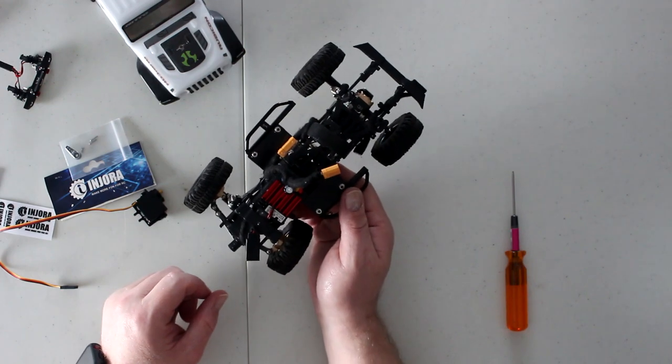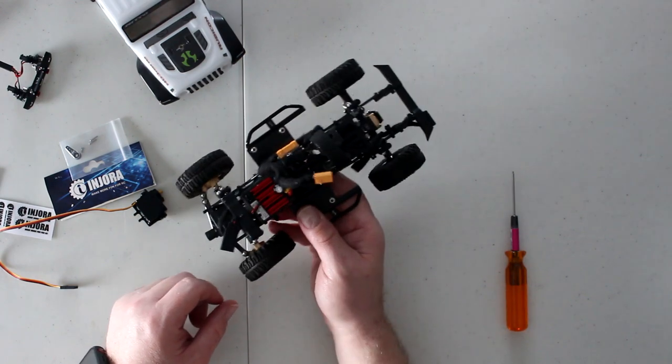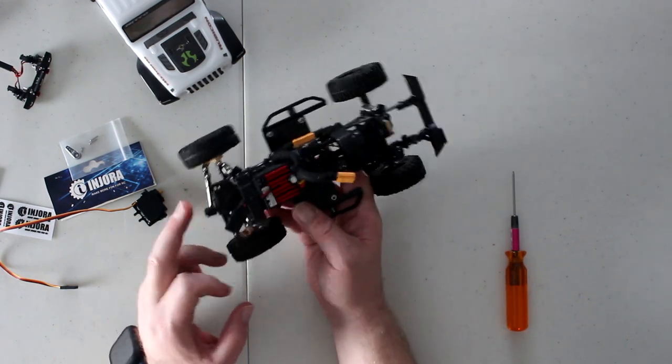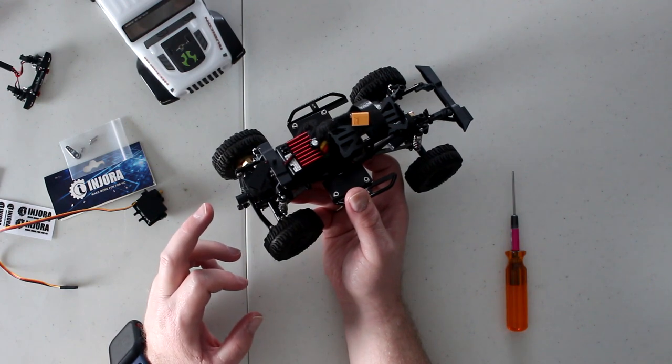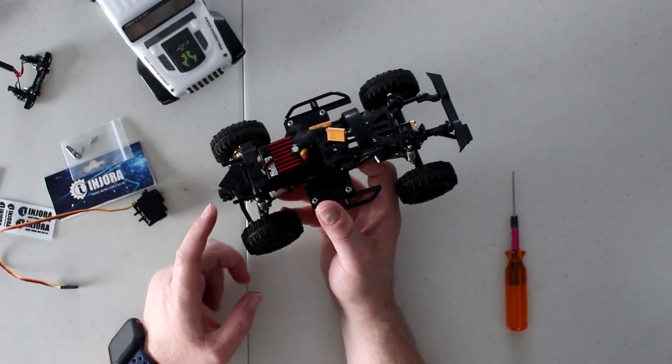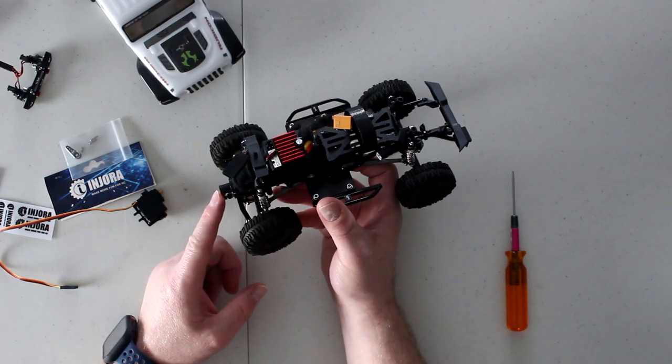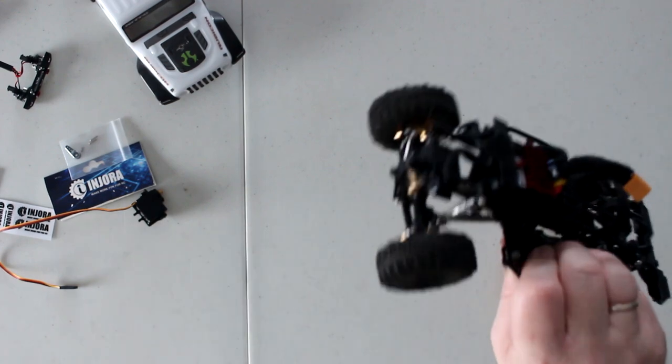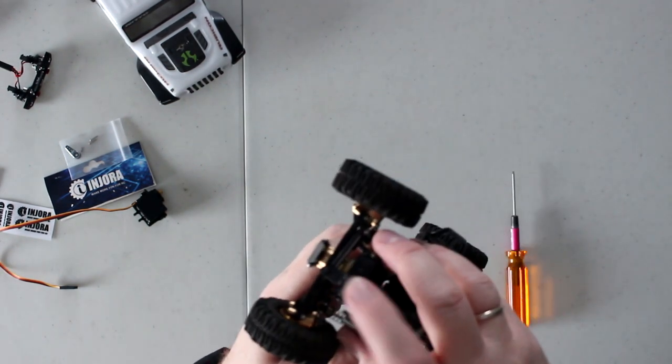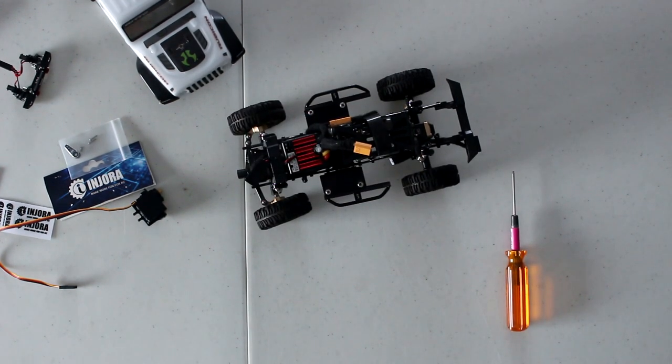Today what I want to do is replace the servo. It finally died on me. This is the stock servo that has plastic gears. The other reason I waited so long to replace this is I did not want to put back the stock servo saver. That's going to be a little bit hard to see, I don't have a lot of lightning in the studio today.